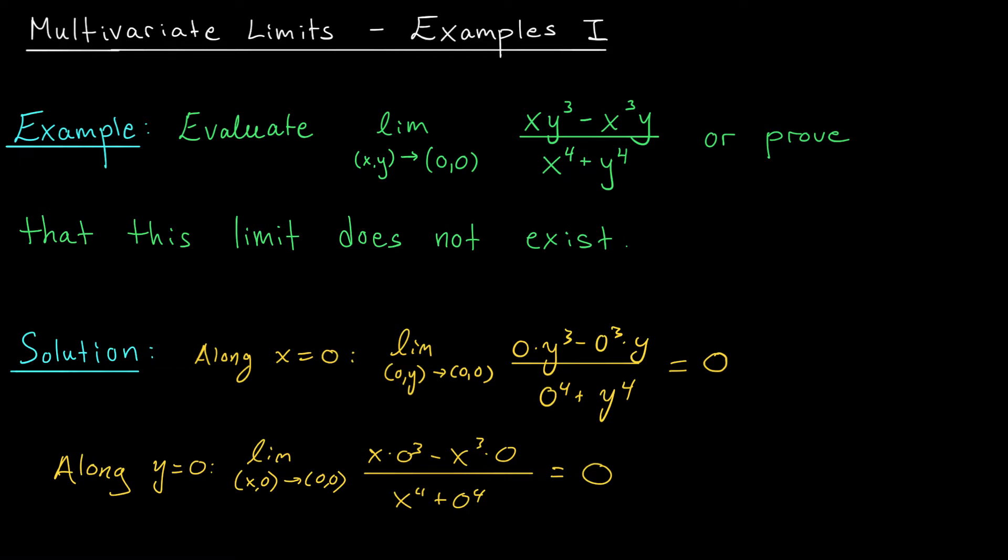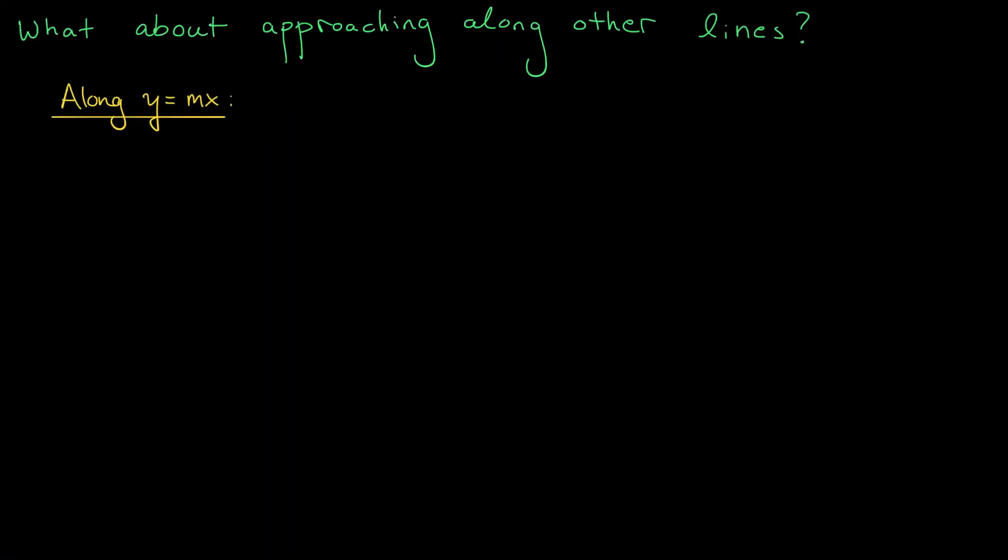So why don't we check some other lines? In general, if we're going to the origin, we could take any line y equals mx. That's what I'm going to check next. We've considered the behavior of our function as we approach the origin along two very special lines, x equals 0 and y equals 0. But there are tons of other paths left to consider. Even if we just restrict our attention to lines, we could get to the origin along any line y equals mx.